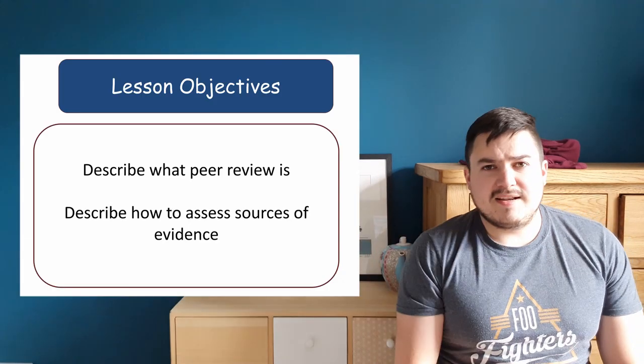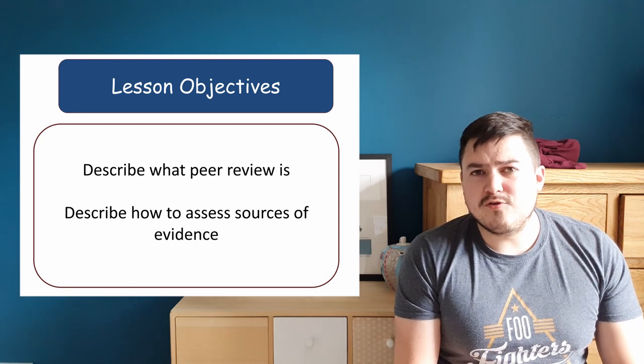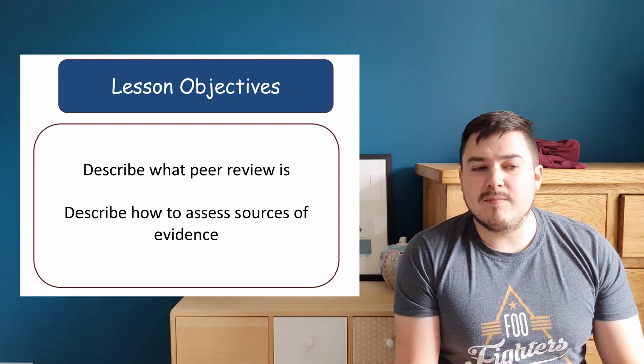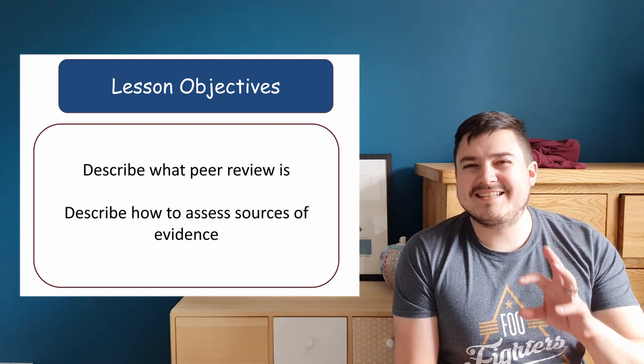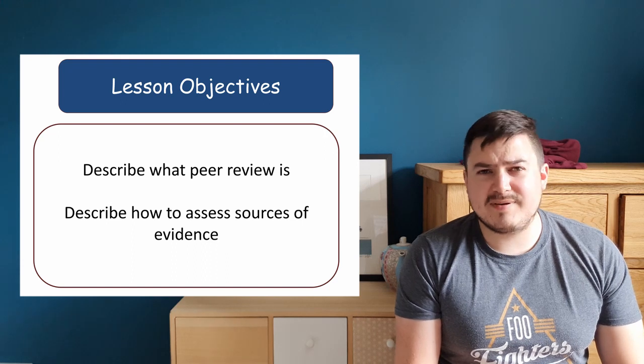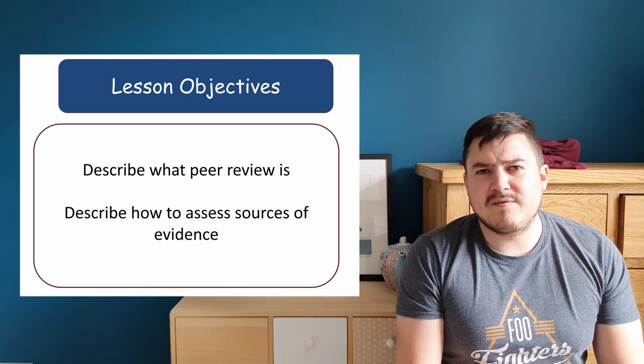Great, let's move on to the rest of the lesson. Your objectives in today's lesson are going to be the following two things. You're going to first of all be able to describe what we mean by a peer review and why we go through the peer review process. You're also going to be able to describe and talk about how we can assess the source of some evidence, because evidence generally comes from various places and you need to be able to know what's a good source and what's a poor source of information.